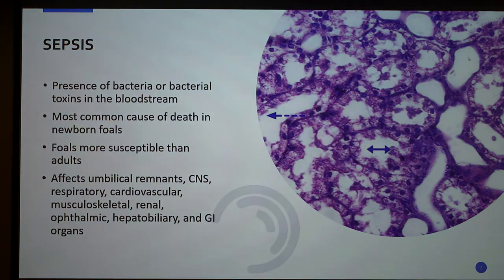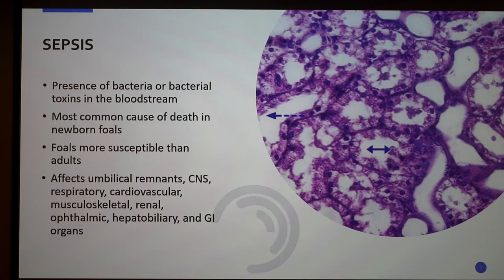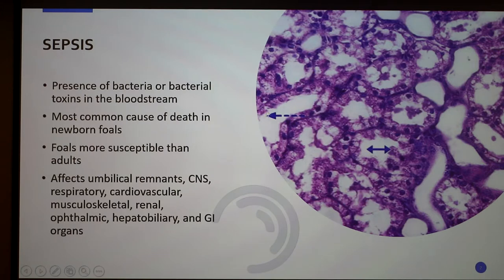Septicemia is also called sepsis. It's basically a general term for the presence of bacteria or bacterial endotoxins in the bloodstream. It is the most common cause of death in newborn foals. It can affect the umbilical remnant after birth, the central nervous system, the respiratory system, the cardiovascular system, as well as other systems. This picture here is showing the breakdown within the tissues due to the bacteria — the walls are kind of thinning out compared to some of the others.